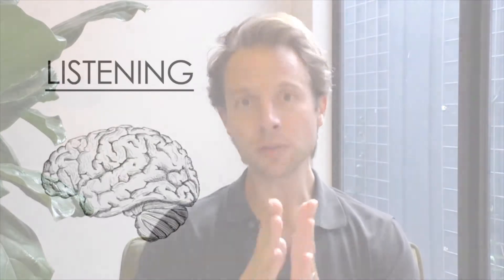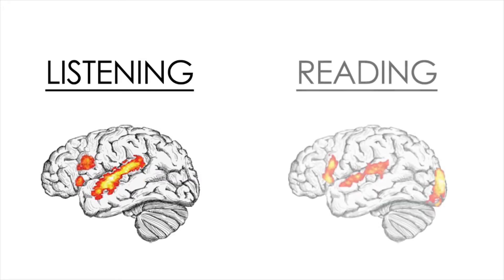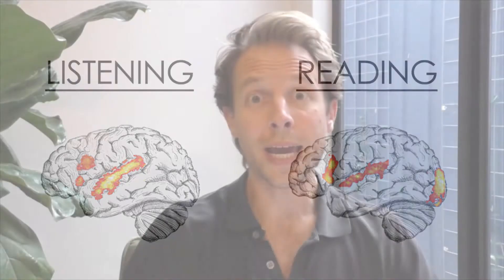The reason for this concerns how the brain processes reading and listening. When you're listening to a narrator, a very specific auditory-linguistic area of the brain is used to process that voice. Interestingly, this exact same network is used to process silent reading — so just like you can't understand two people speaking at you at the same time, neither can you understand a narrator while trying to read simultaneously.